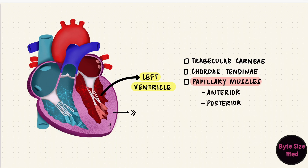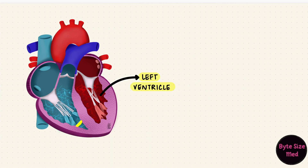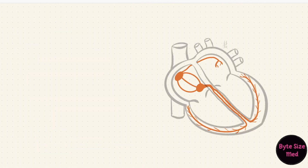The wall of the left ventricle has more muscle than the right, which makes sense functionally because the left ventricle has to pump blood to reach all parts of the body against systemic vascular resistance, while the right ventricle just has to pump blood to the lungs against a lower resistance through pulmonary circulation. But unlike the right ventricle, the left ventricle does not have a moderator band. The moderator band is a specialized trabeculum in the right ventricle, also called a septomarginal trabecula because it's a bridge between the interventricular septum and the base of the anterior papillary muscle. This is important in cardiac conduction.